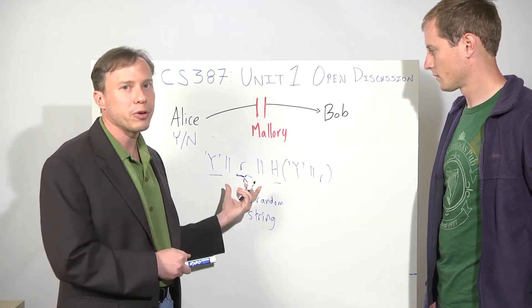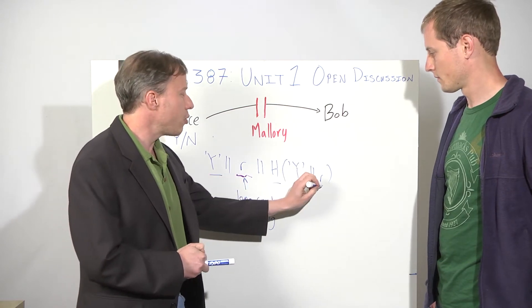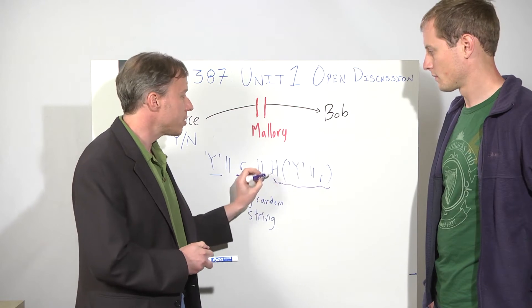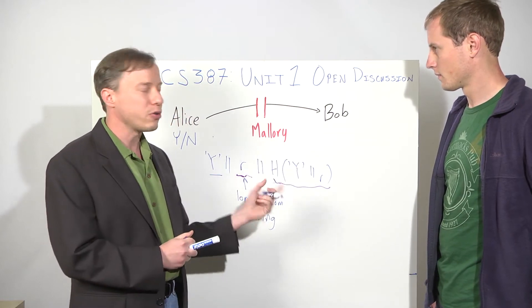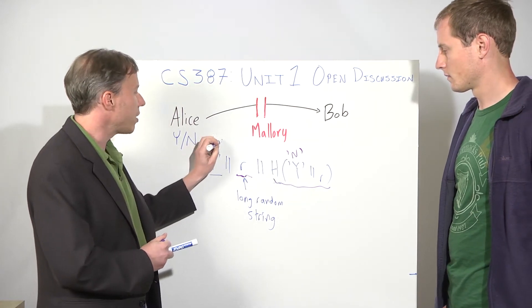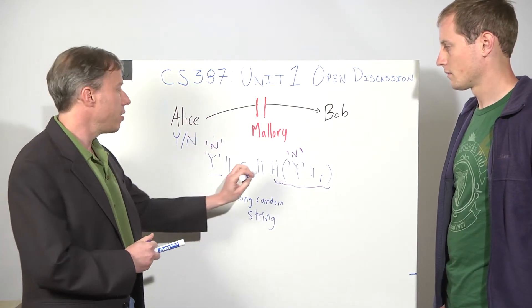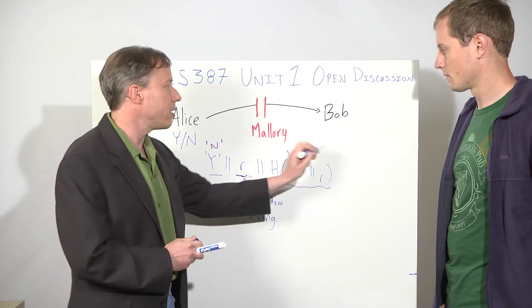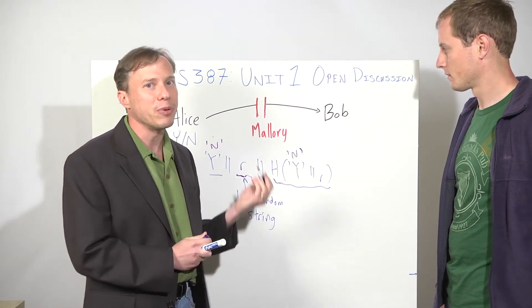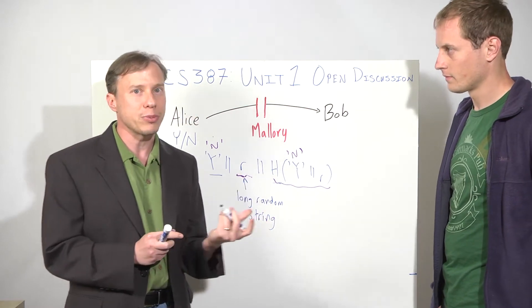And that's useful because Bob can't predict what this value is without knowing what the value of R is. And if the value of R is random and not known to Bob, there's no way for Bob to predict the output of this hash. If he tries to change this, there's no way to change it in a way that knows the difference between what the result would be if this was an N and when it was a Y. So Mallory could flip these bits, but then the hash value wouldn't be correct, and Bob would know that it was wrong. So this is a reasonable way to do it.